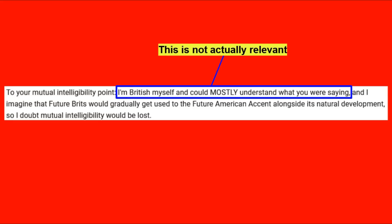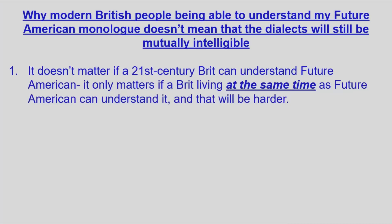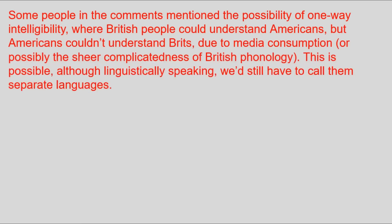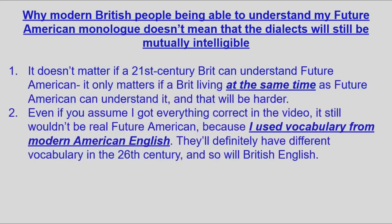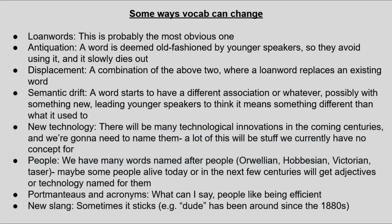Some British people commented that they could understand the ending monologue in Future American with ease, but that doesn't say much about mutual intelligibility for two reasons. One, what matters is whether a British person living contemporarily with future American can understand it — and due to the extra linguistic distance, they'll have a much harder time, though one-way intelligibility is still possible. The bigger reason it doesn't matter is vocabulary: while I spoke that monologue with future American phonology and grammar, I was still using 2022 vocabulary. Vocabulary doesn't follow rules in the same way that sounds and grammar do, so my first bit of advice is: don't even attempt future vocabulary — it will get you nowhere.